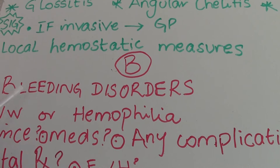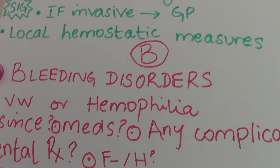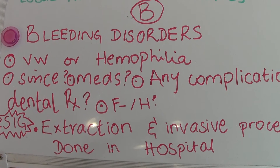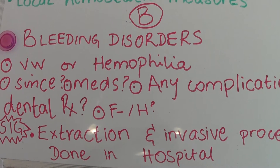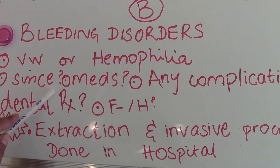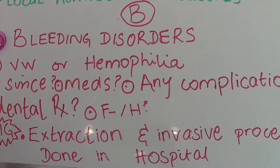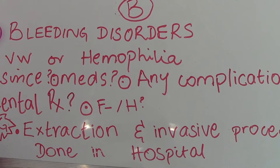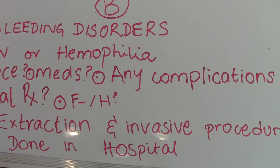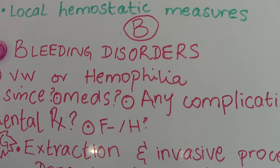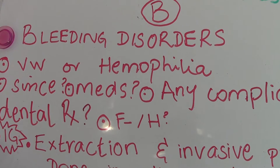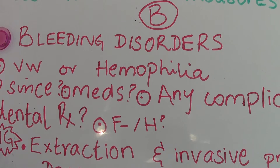Moving on to bleeding disorders — in this exam these will most likely be von Willebrand disease or hemophilia. We ask the patient since when they've had it, if they're taking any medications (which they usually aren't), and whether there have been any complications in dental treatment due to their bleeding disorder, which would be excessive bleeding.